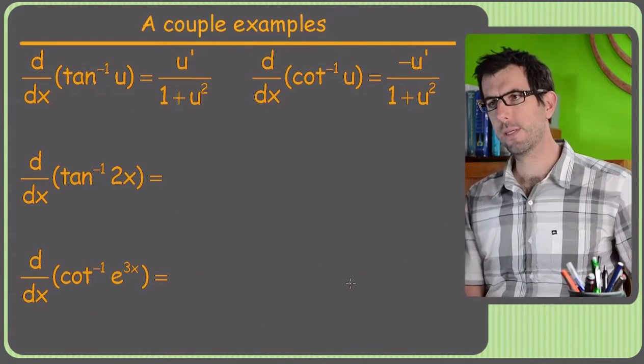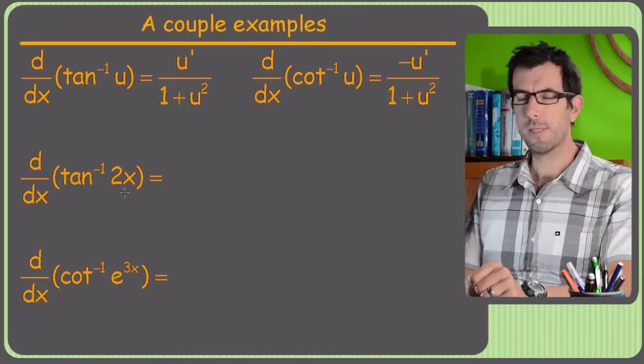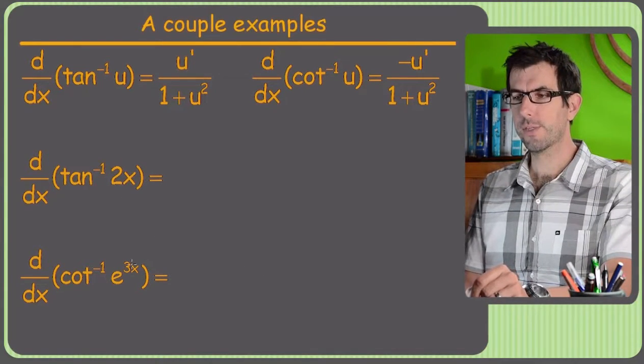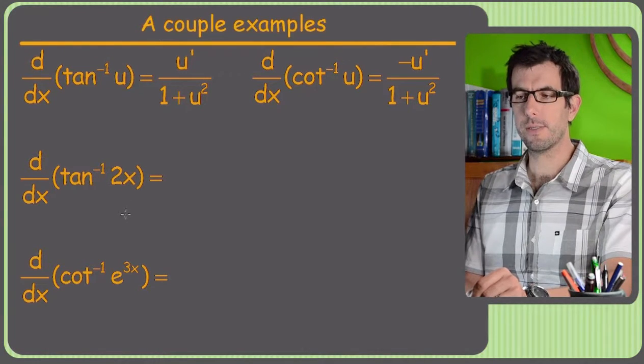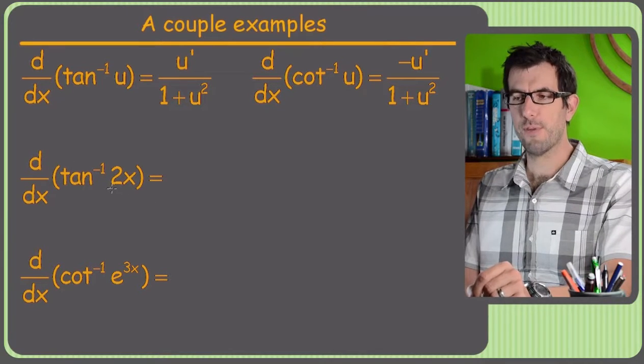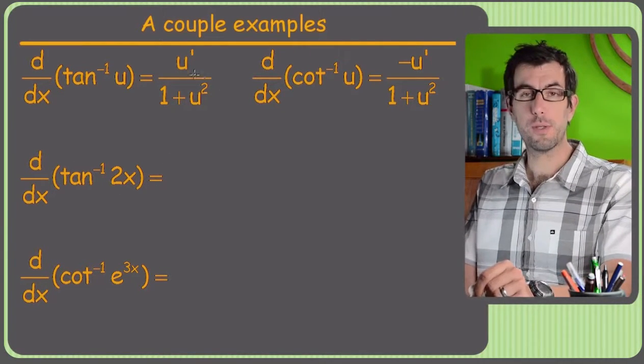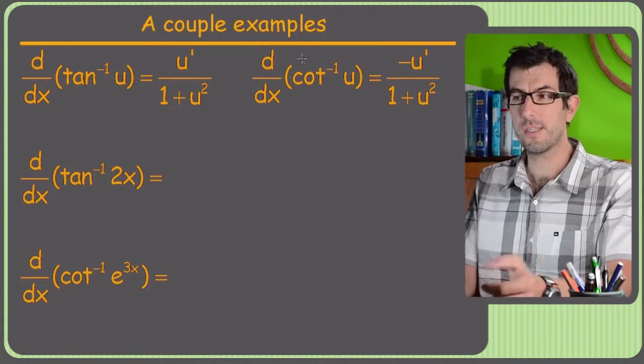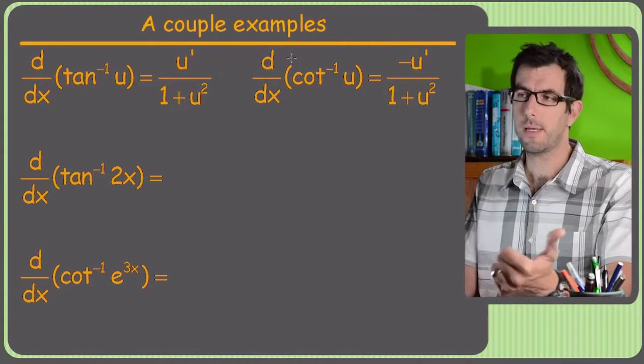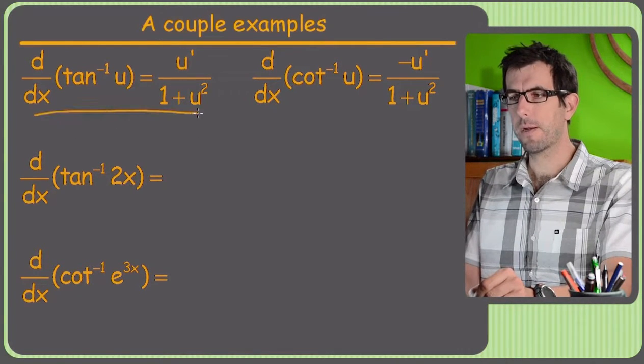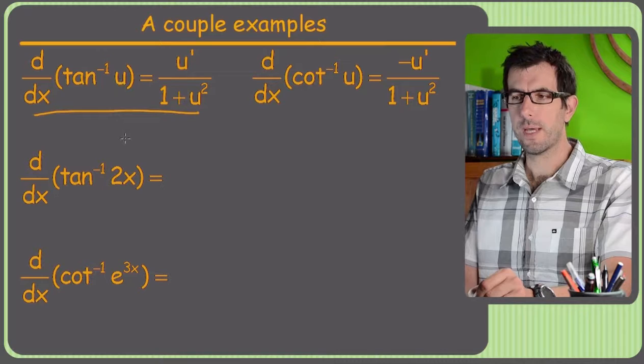A couple more this time with tangent and cotangent. And this one's actually going to be a little bit trickier because we might have a nested chain rule on this last one. Let's see what happens. Alright, so first of all, inverse tangent. Now these formulas are a little bit different from the cosine and sine formulas, but they're really just the same to execute. You figure out where your U is, plug and chug. So inverse tangent, that's this formula up here. Our U is obviously the 2x.